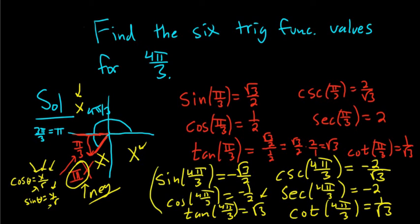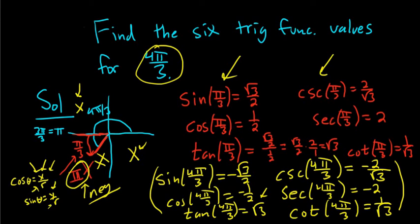So those are the answers, shown here in yellow. The key is: first find the reference angle, then find the trig function values for the reference angle, and then think about which quadrant you're in. Some people like to memorize the entire unit circle, but it's better to just memorize the first quadrant and use your knowledge of where cosine and sine are positive to get the rest. I hope that made sense.